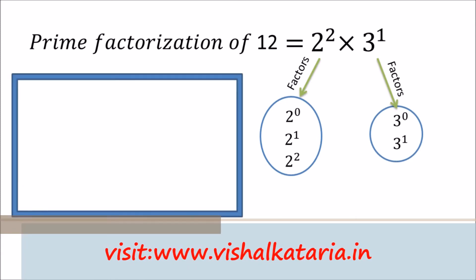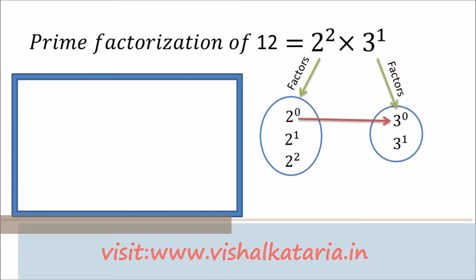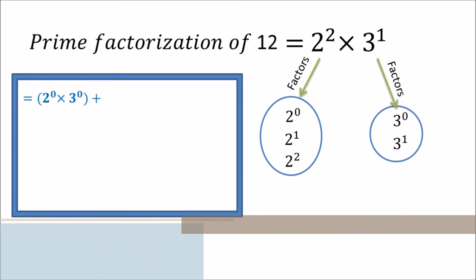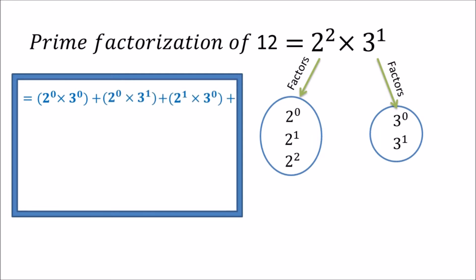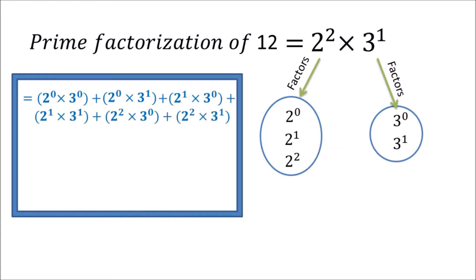The sum of divisors of 12 will be: 2 raised to 0 times 3 raised to 0, plus 2 raised to 0 times 3 raised to 1, plus 2 raised to 1 times 3 raised to 0, plus 2 raised to 1 times 3 raised to 1, and so on. This is how we obtain the sum of divisors of 12.